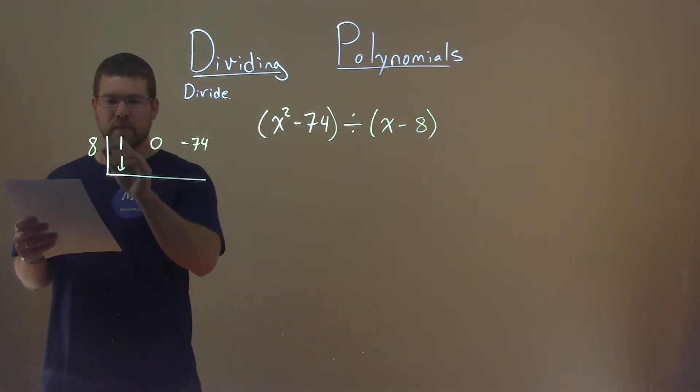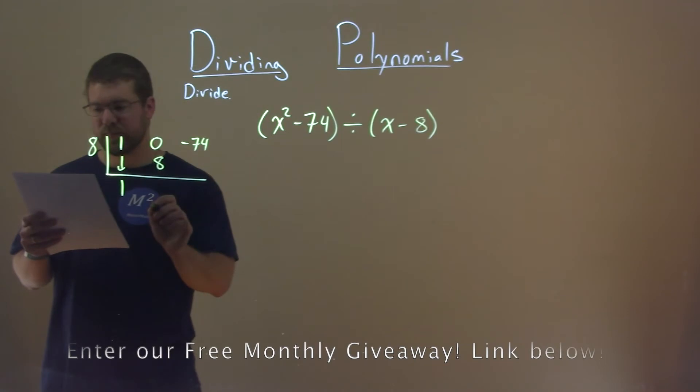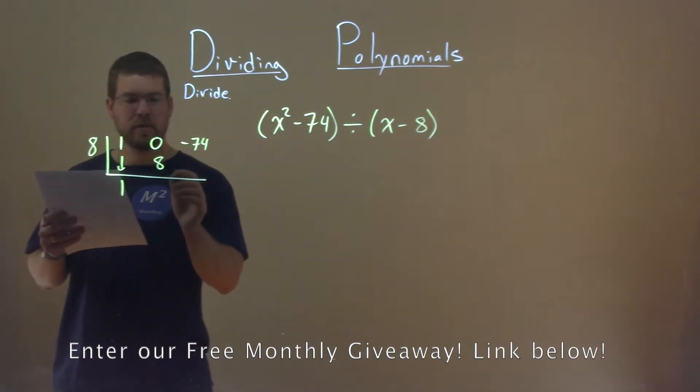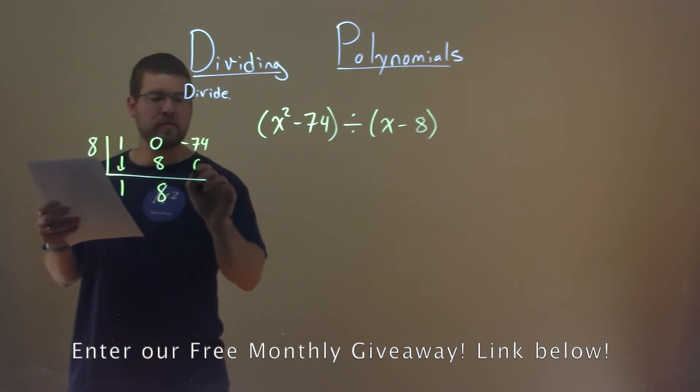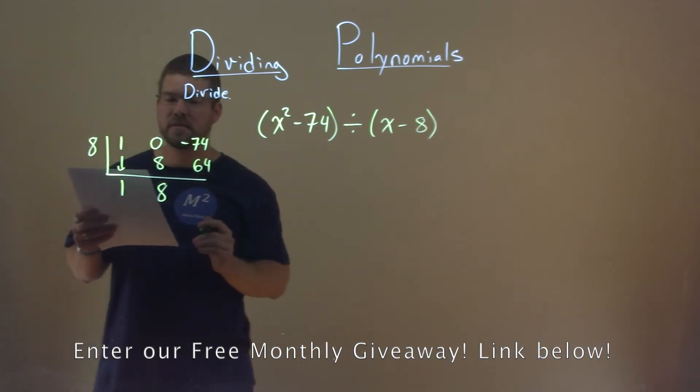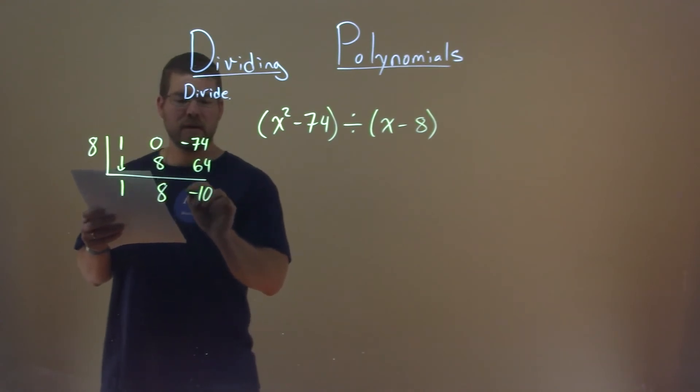Bring down the 1, 8 times 1 is 8. Add the two together, 0 plus 8 is positive 8. 8 times 8 is 64, and negative 74 plus 64 is negative 10, and that's our remainder.